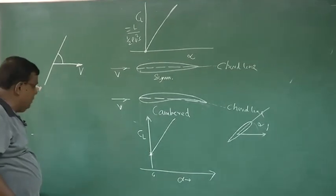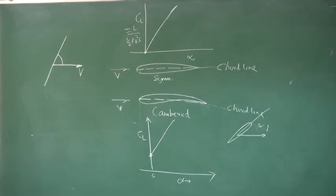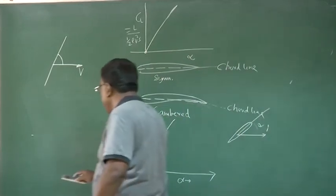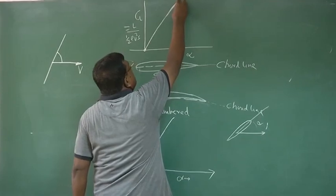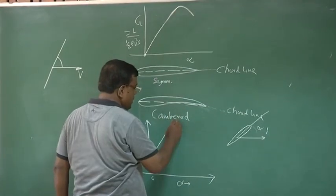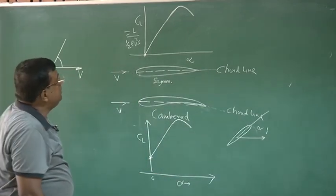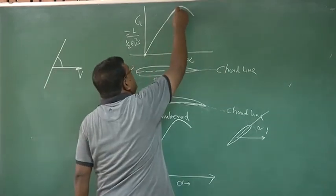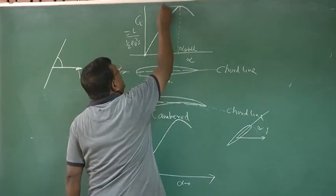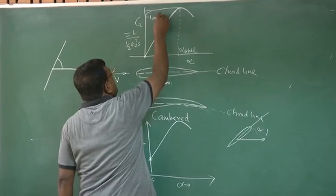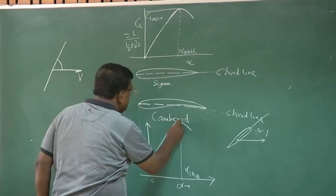But beyond a certain point, beyond a certain alpha, you will see that lift is no more increasing — in fact, it is going down. There is a limit which we call alpha stall, and this value is called CL max. Beyond a certain angle called alpha stall, the flow will no more remain attached, there will be a separation and a stall, the lift will reduce, and drag will increase.